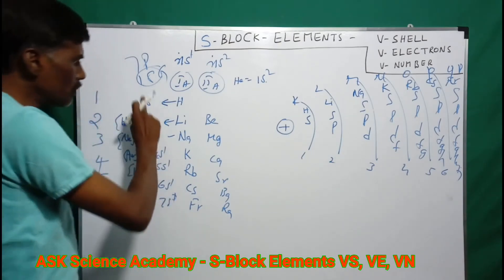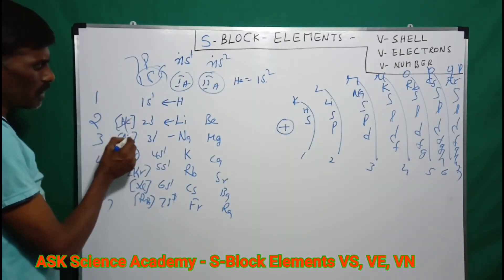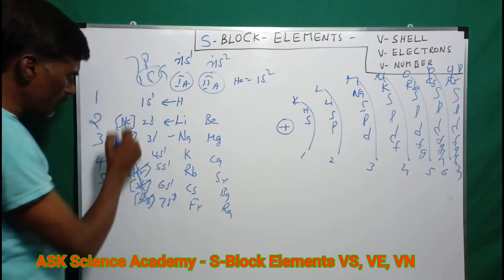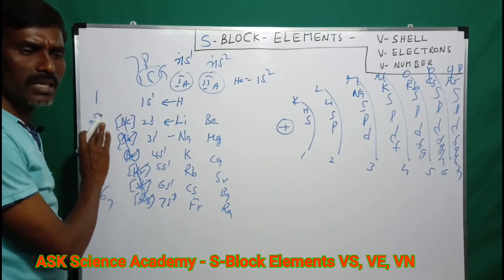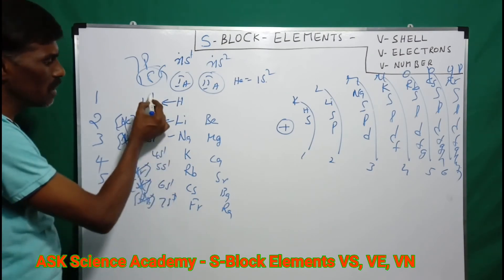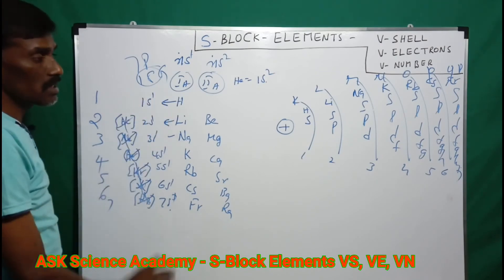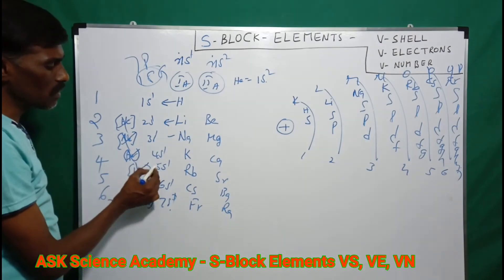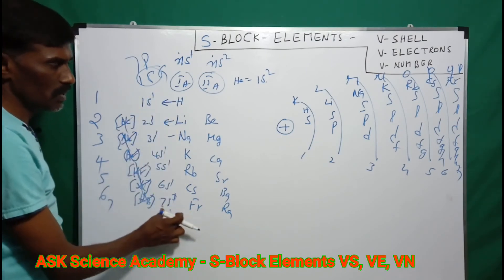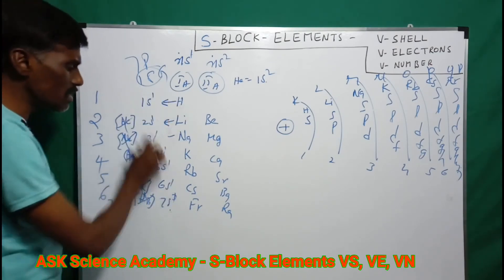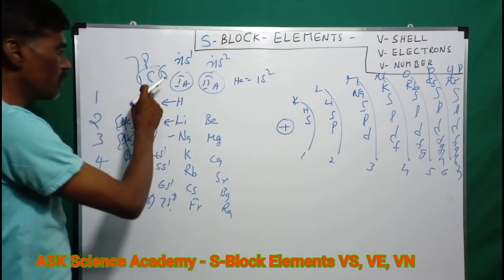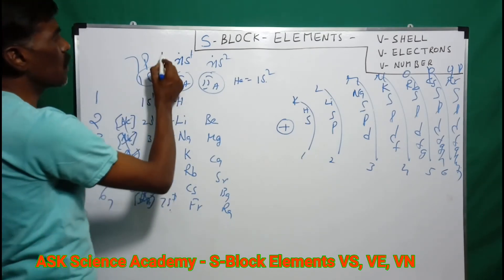Now we come to valence electrons. The outer shell electrons — those beyond the core configuration — are the valence electrons. For Group 1, the valence electrons are 1s1, 2s1, 3s1 up to 7s1, meaning each Group 1 element has 1 valence electron. So the valency for the first group is 1.